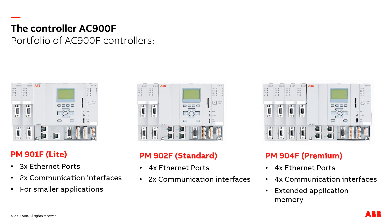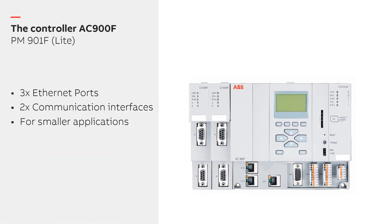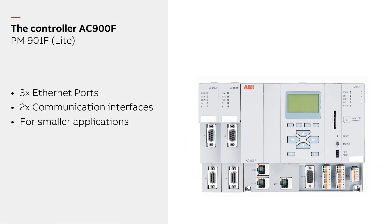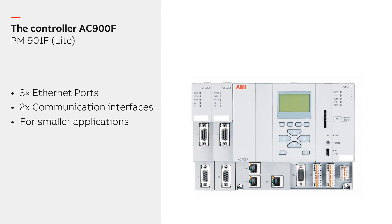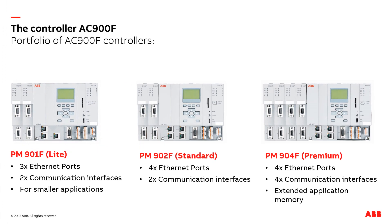As part of the AC900F standard range, the light version of the CPU, the processor module PM901F, is made for smaller applications. It includes three Ethernet interfaces instead of four for the standard CPU, but it still supports redundancy for high availability.